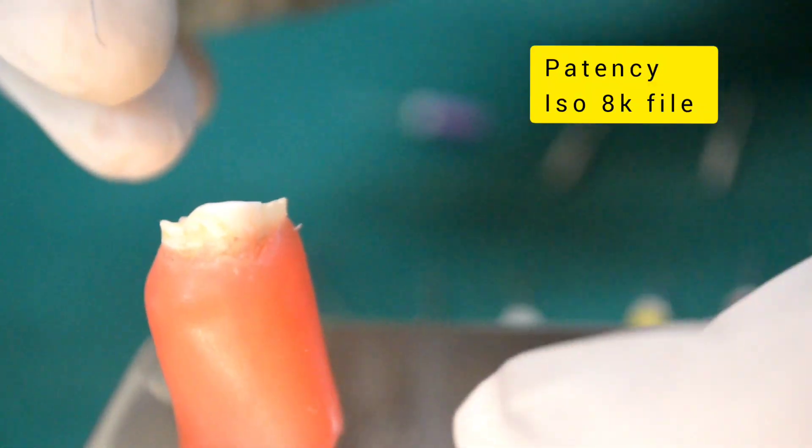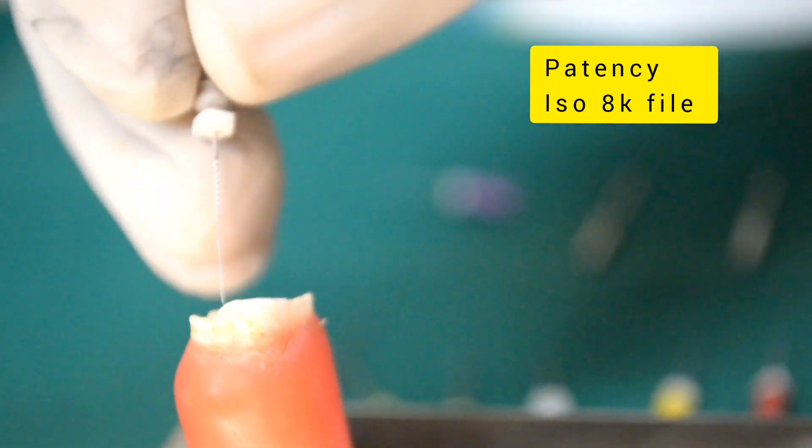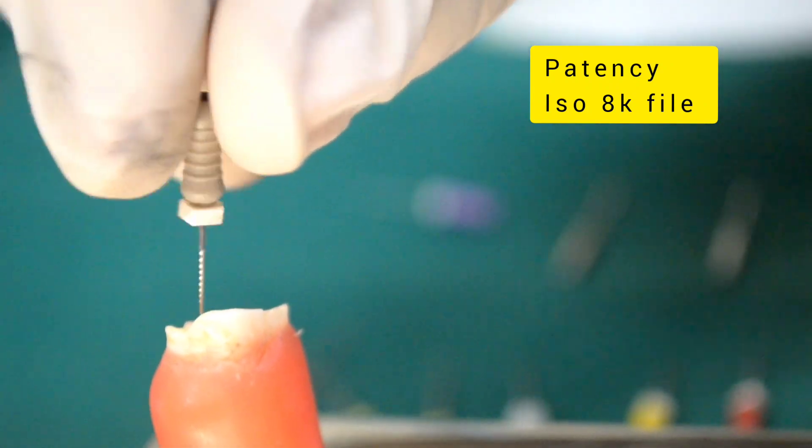Now let's look at it clinically. Patency of the canal is first established with a pre-curved number 8K file.